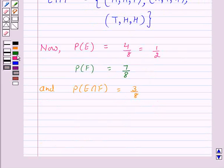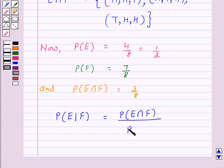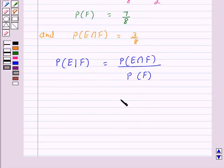Now according to our key idea, probability of E given F is equal to probability of E intersection F upon probability of F. So this is equal to 3 upon 8 times 8 upon 7, and this is equal to 3 upon 7.